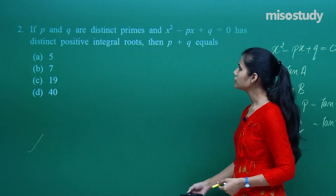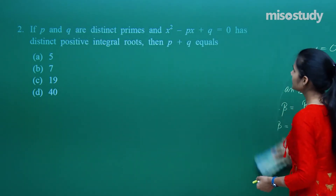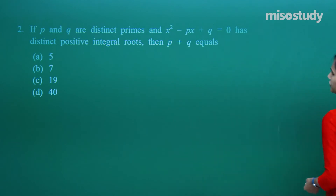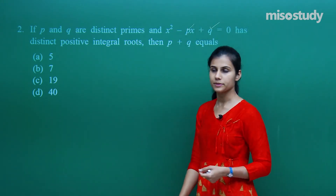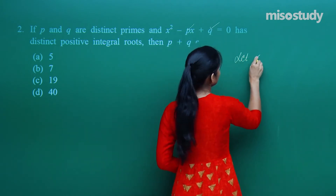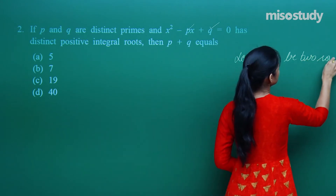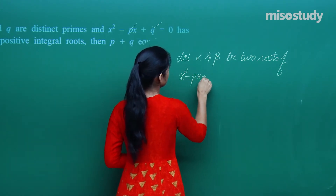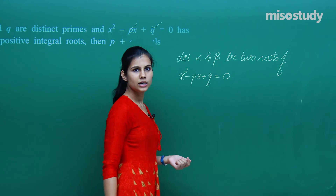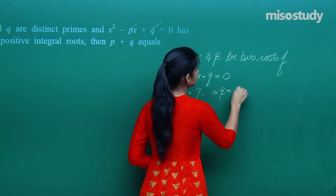Moving to the next question: p and q are distinct primes, and the equation x² - px + q = 0 has distinct positive integral roots. What is p + q? No information about the roots is given directly — just that p and q are primes. Let alpha and beta be the two roots. The sum of roots is p and the product of roots is q.